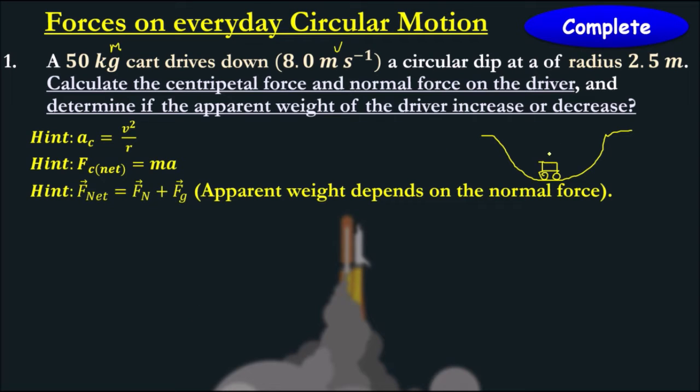Let's have a look at our force diagram here. This is the object's circle of motion. The centripetal force is pointing up. The normal force is pointing up.